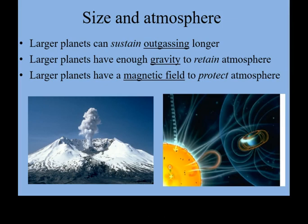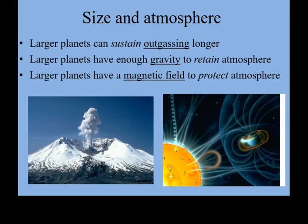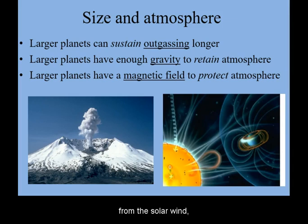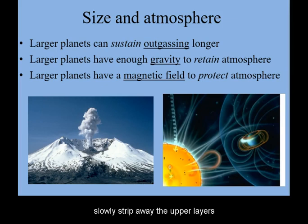Finally, the Earth sustains a global magnetic field. This helps shield it from the solar wind that would otherwise slowly strip away the upper layers of our atmosphere.